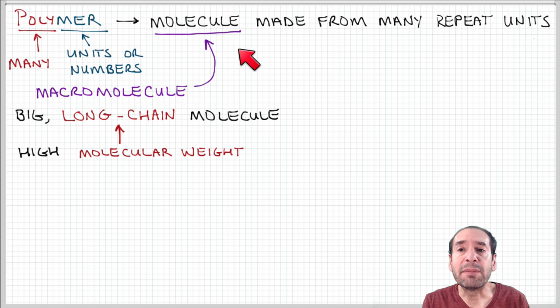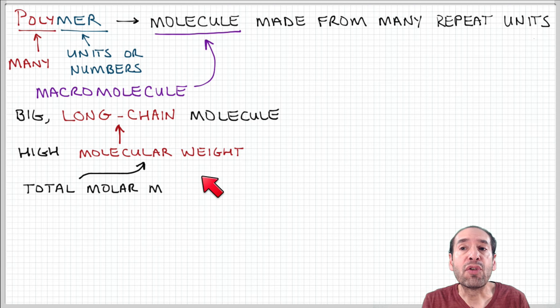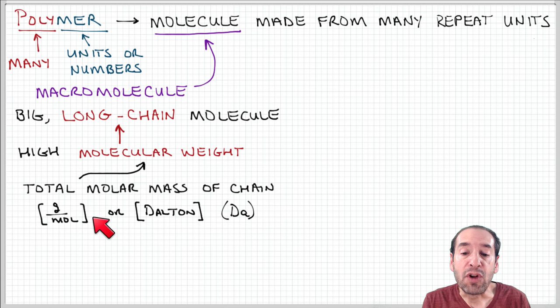So now that we said these are big molecules, how do we quantify how big big is? One way that's conventionally used is to use a parameter called the molecular weight. This quantity expresses the total molar mass of all the atoms that make up the polymer chain. The units are grams per mole, or sometimes that's called the dalton. One dalton is one gram per mole.